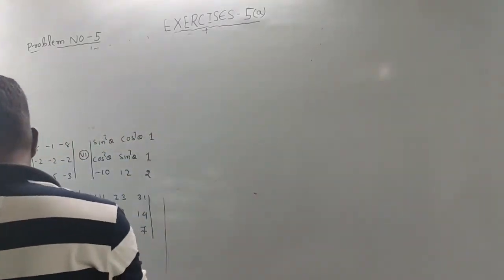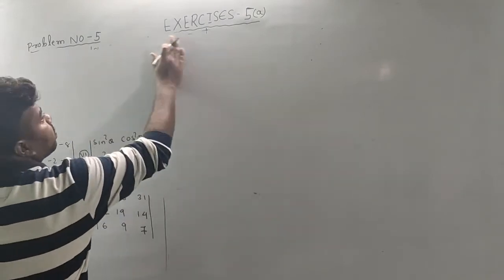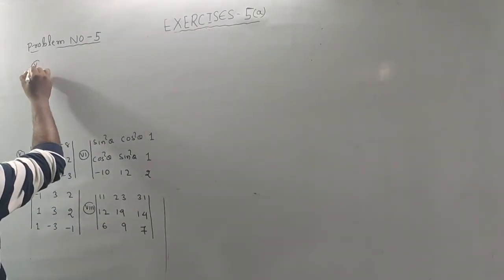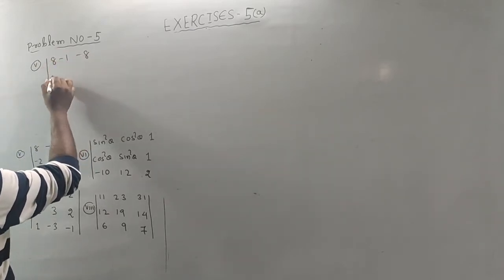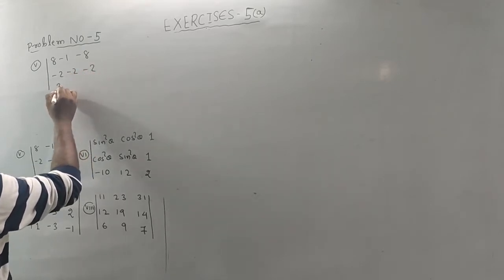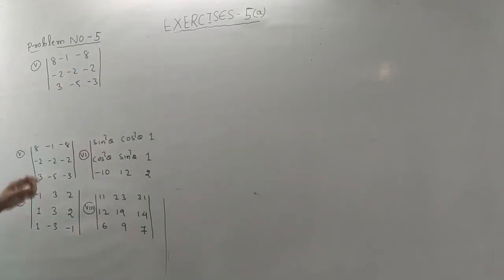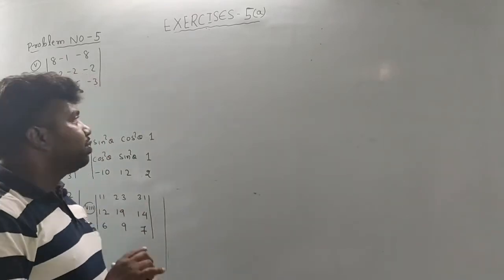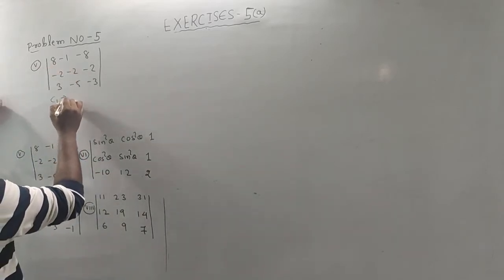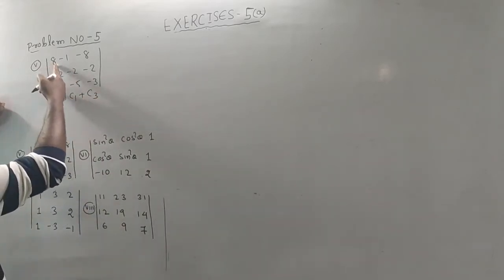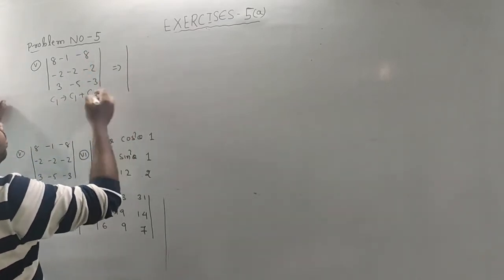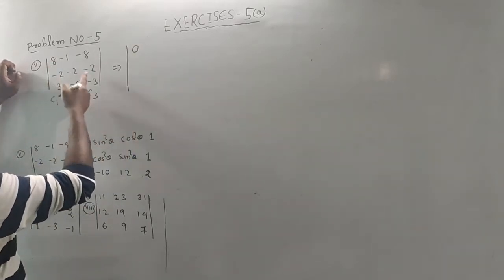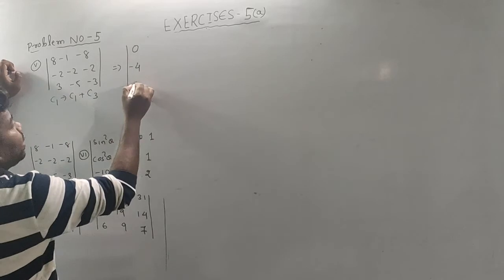I'm going to go to the 5th question. Number 5 question: 8, 1, 8, 2, 2, 2, 2, 3, 5, 3. Let me show this question. We see that the determinant is 0. So let me tell you: C1 tends to C1 plus C3. 8 minus 8 is 0, 3 minus 3 is 0. So: 8 minus 8 is 0, minus 2, minus 2, that is minus 4; 3 minus 3 is 0.